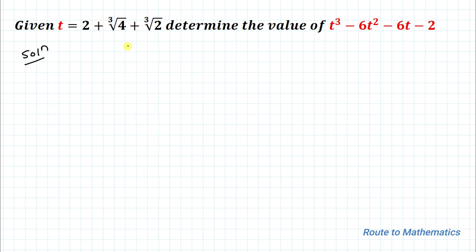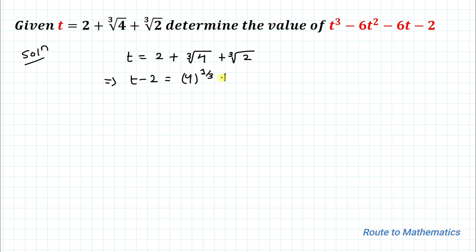We have given the value of t equals 2 plus cube root of 4 plus cube root of 2. This implies t minus 2 equals 4 to the power 1/3 plus 2 to the power 1/3. Let's take this as equation 1.